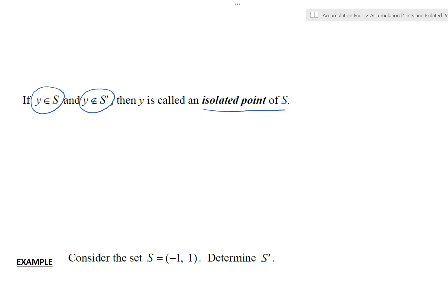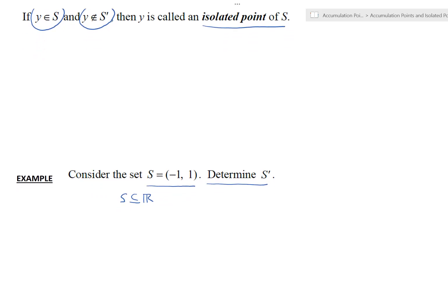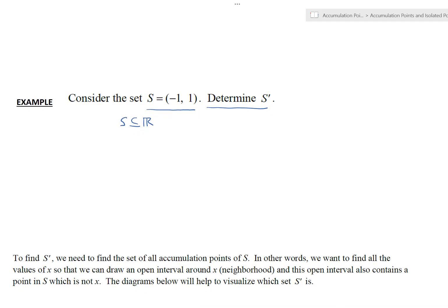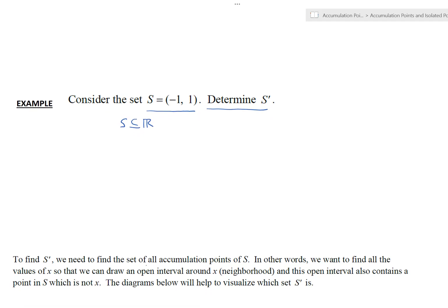Here's the first example. Let's consider the set S, the open interval negative 1 to 1. We want to find the set of all accumulation points of S, that is S prime. Note first of all that S is indeed a subset of R, so we need that to talk about accumulation points. Our goal is to find all the values of X such that we can draw an open interval around X — a neighborhood — and this open interval also contains some point in S which is not X.